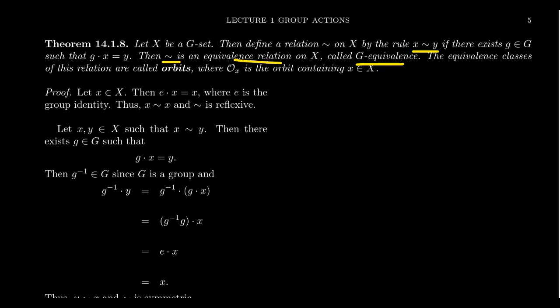The equivalence classes of this relation are called the orbits, sometimes called the G-orbits of X in case G is ambiguous. It's commonly referred to as O_X, the orbit that contains the element X. So if we can prove that this relation is an equivalence relation, then it has associated to it a partition. That partition we call the orbits of the set X. So let's prove that it's an equivalence relation. There are three things we have to check: reflexive, symmetric, and transitive.